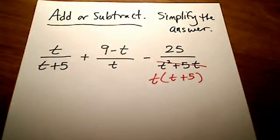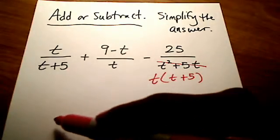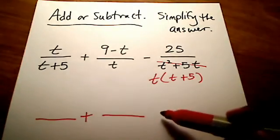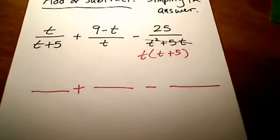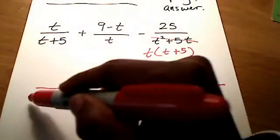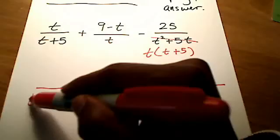So now can you see what the LCD is going to be for all three of these fractions? I hope it's a little bit more visible to you. So the LCD for all three of these fractions is going to be, let me slide this down, it's going to be t and t plus 5.